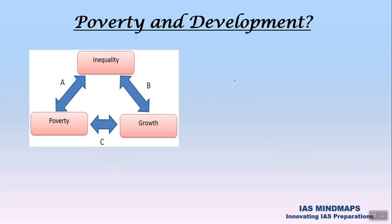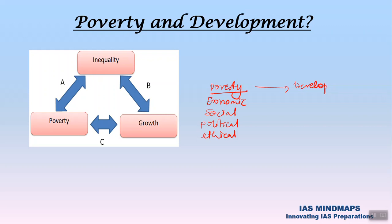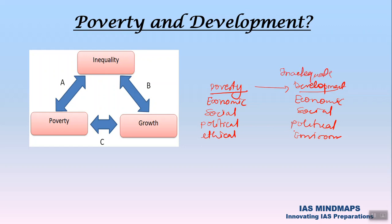Poverty could manifest in different aspects like economic poverty, social poverty, political poverty, or ethical poverty. Similarly, development could be economic development, social development, political development, or environmental development. If there is poverty in a society, that will lead to inadequate development in all those areas, and that inadequate development will again lead to poverty.